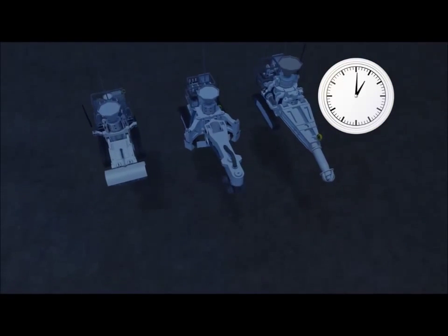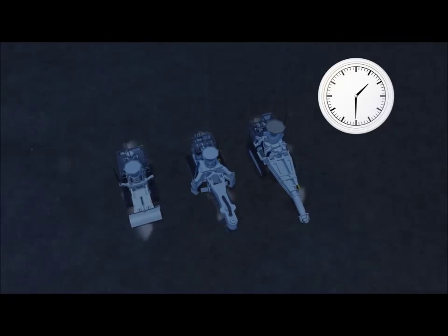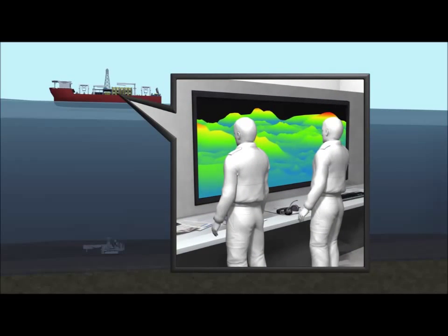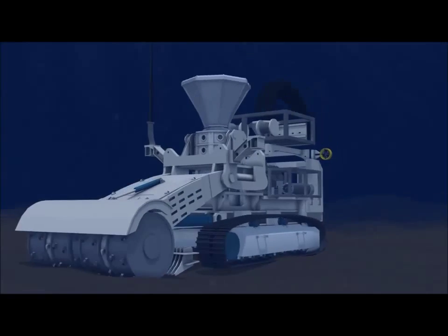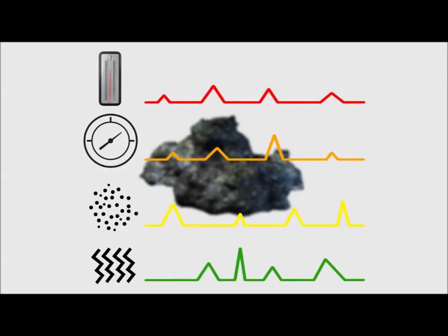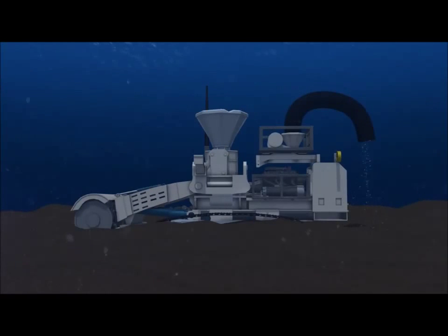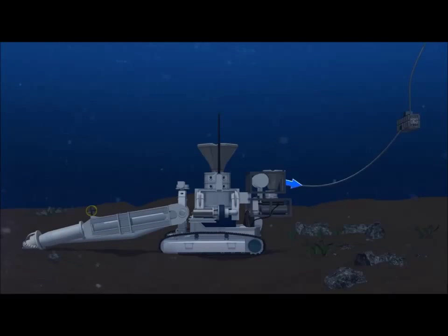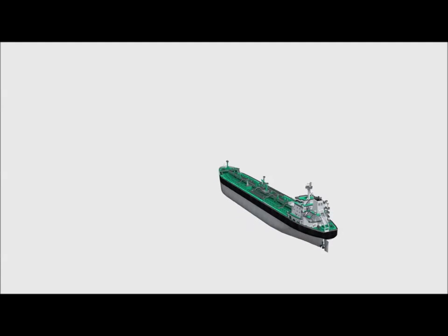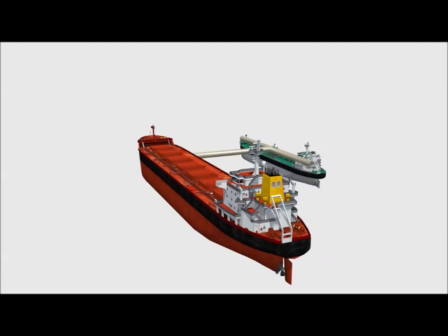Once on the ground, the machines send a 3D sonar map back up to the ship operator. The auxiliary cutter harvests steep and uneven areas on the sea floor, and then the bulk cutter follows, harvesting rock from flat surfaces using a rotating cylinder. The rock is ground up and sent through the machine where temperature, pressure, density, and vibration are measured. The slurry is then deposited and the collection machine follows behind, vacuuming up the slurry and sending it up to the ship. Once on the ship, the slurry is dried and filtered on a barge and carried back to shore for further refinement.